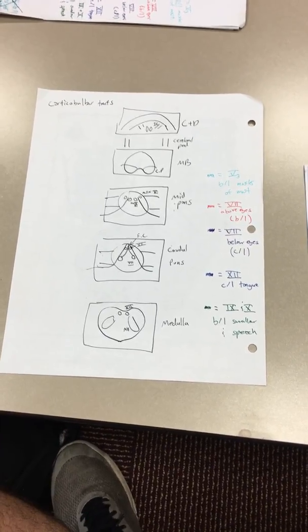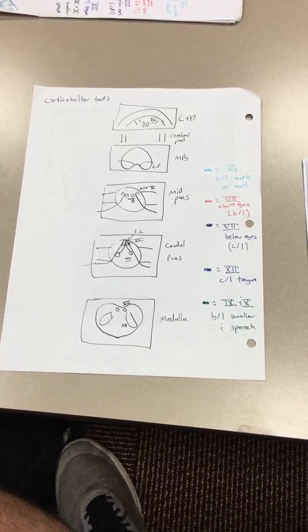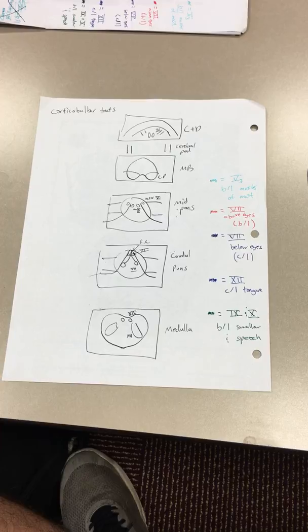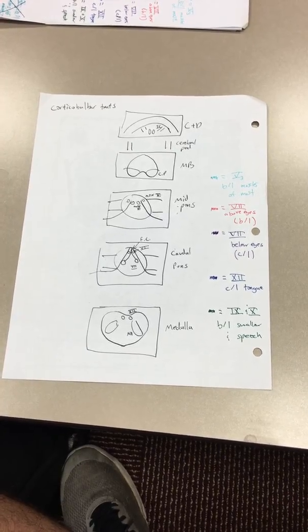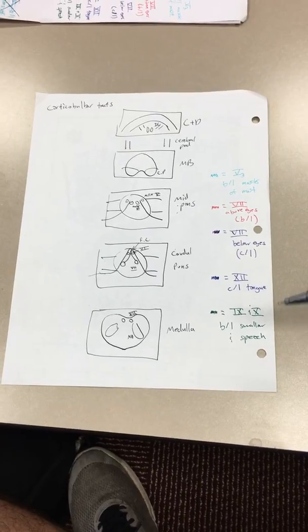Okay, so we're going to talk about the corticobulbar tracts or the corticobulospinal tracts. These are all the tracts involved with sending motor information to your head and neck via cranial nerves. The cranial nerves we'll talk about are V3, 7, 12, 9, and 10.